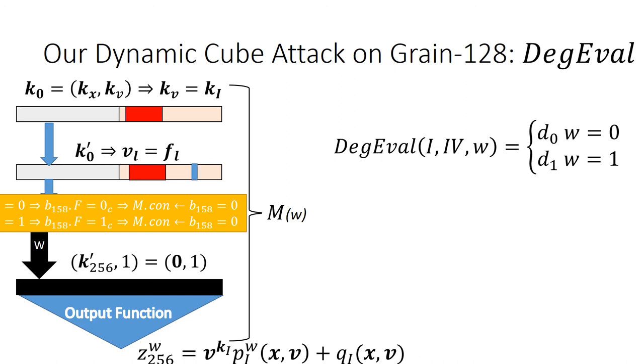For cube I, the degree evaluation method can be called based on such model M so as to upper bound the degree of the superpoly. Such degree evaluation algorithm takes as input not only I and IV, but the key guess W as well. Based on such degree evaluation technique, we design the preliminary criteria for a qualified cube that are likely to satisfy both proof 1 and proof 2 of our dynamic cube attack.